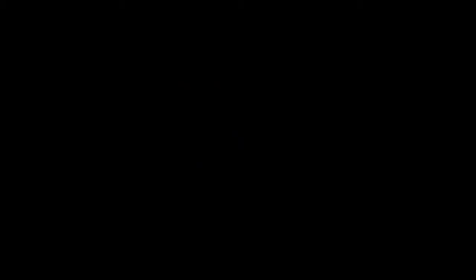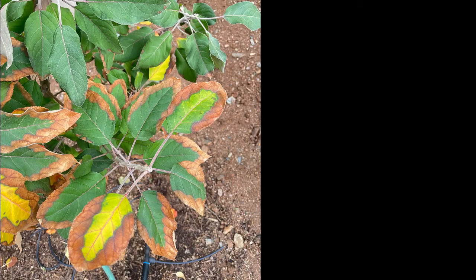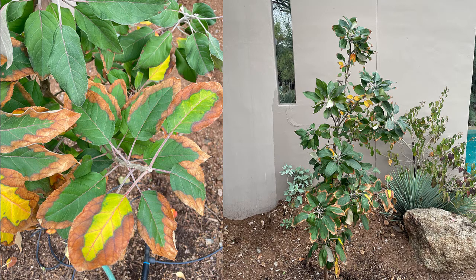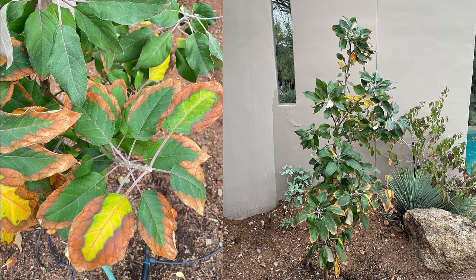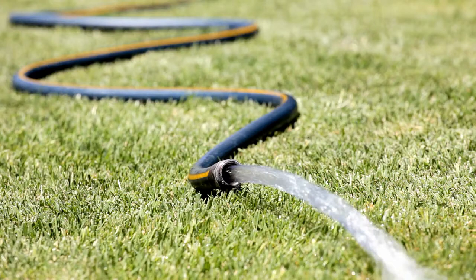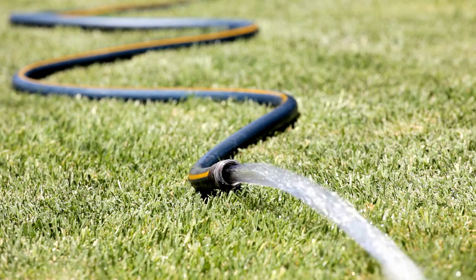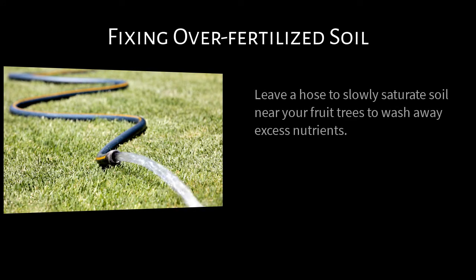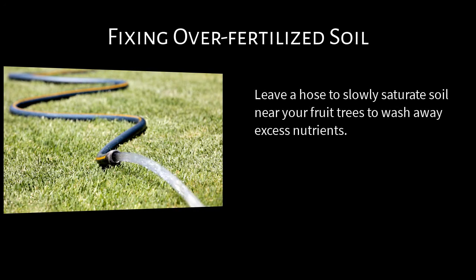Lewis wrote me because he had these challenges with his fruit trees and he wants to fix them. What do you do if you've already over-fertilized your fruit tree? Well, one of the things you can do is put a hose on the ground and put it on a very low rate. Let it drip into the soil for as long as it takes to really saturate the soil, and hopefully it will wash those excess nutrients out of the soil and away from your tree roots.